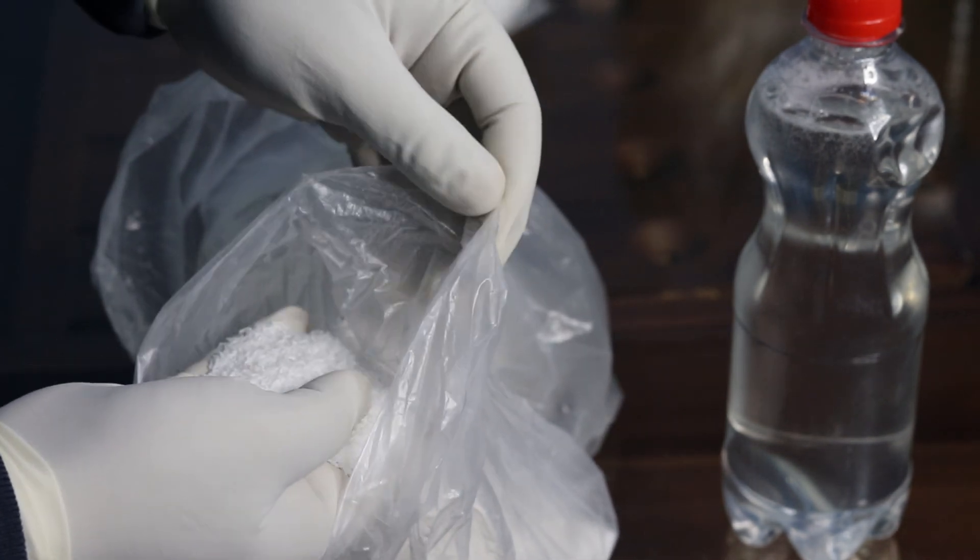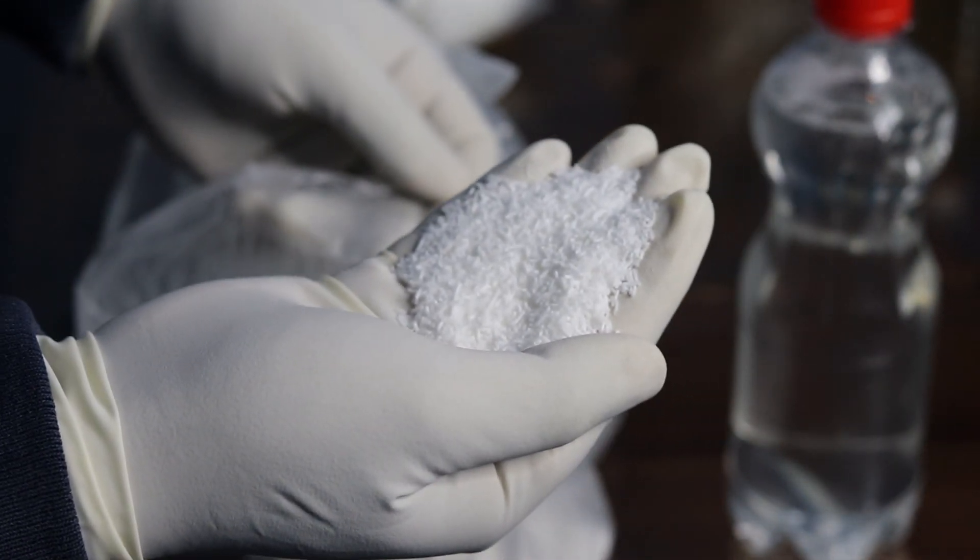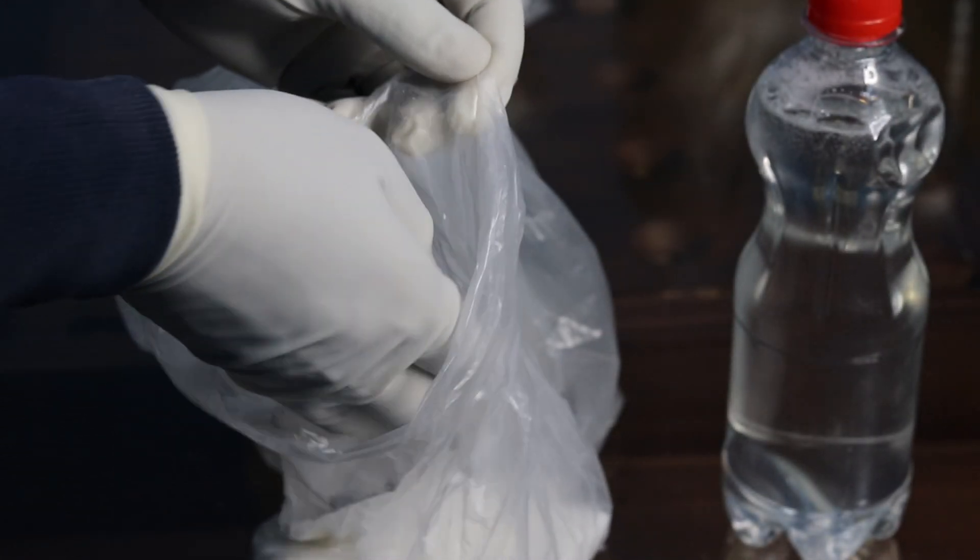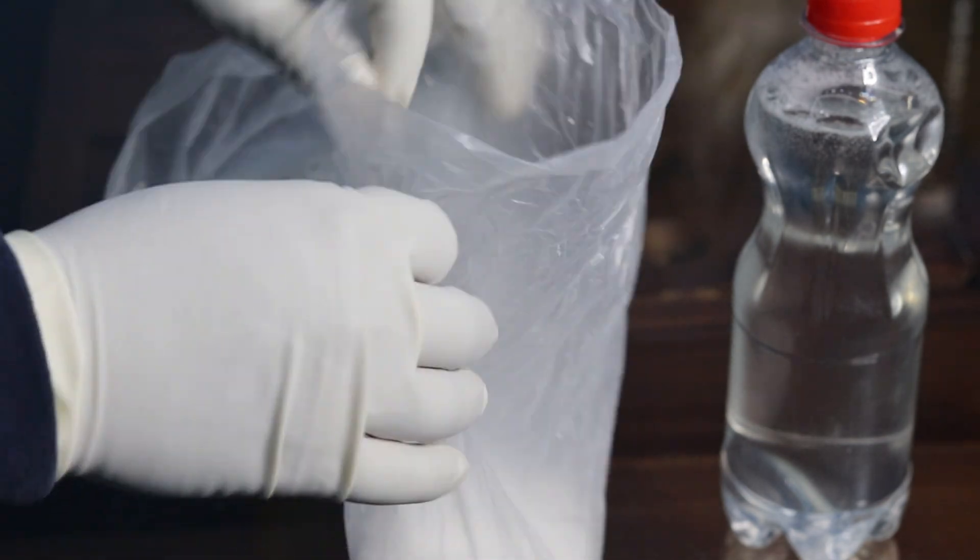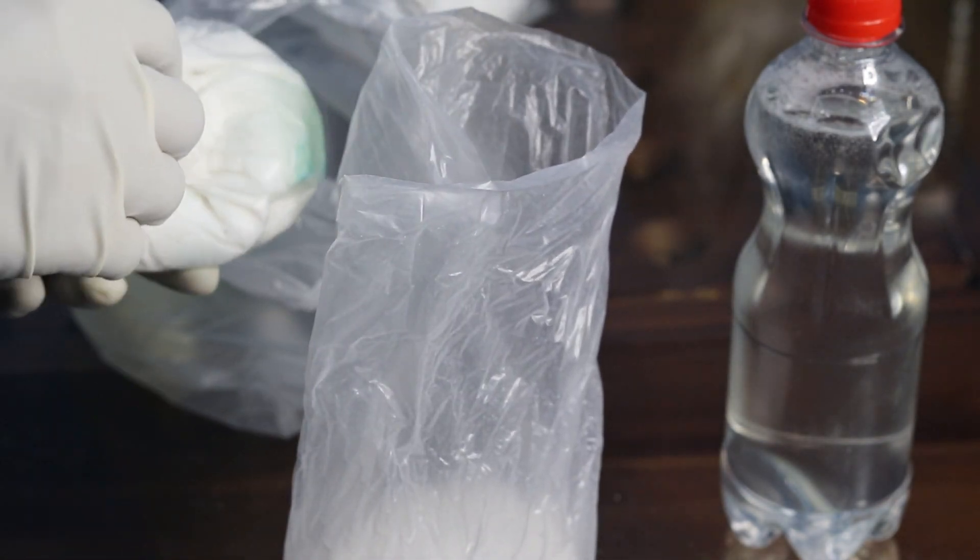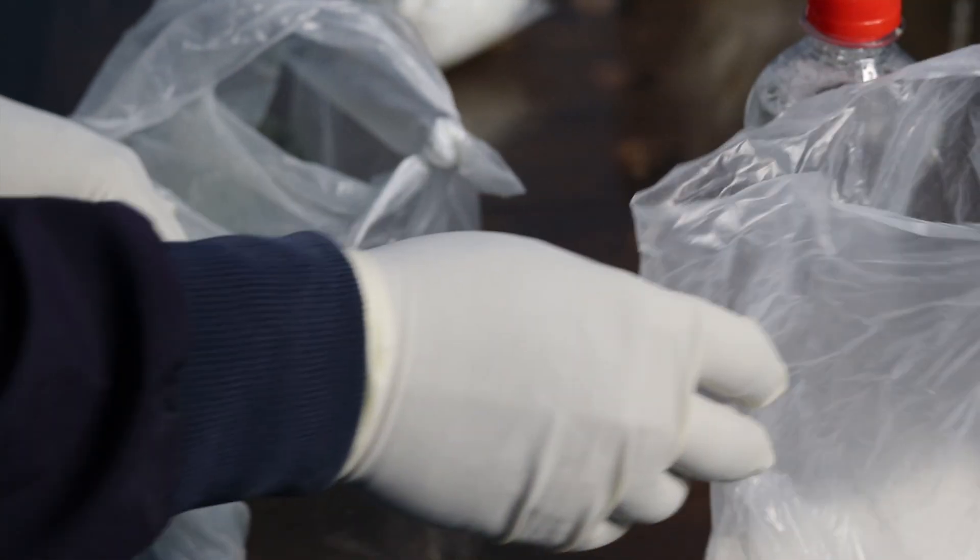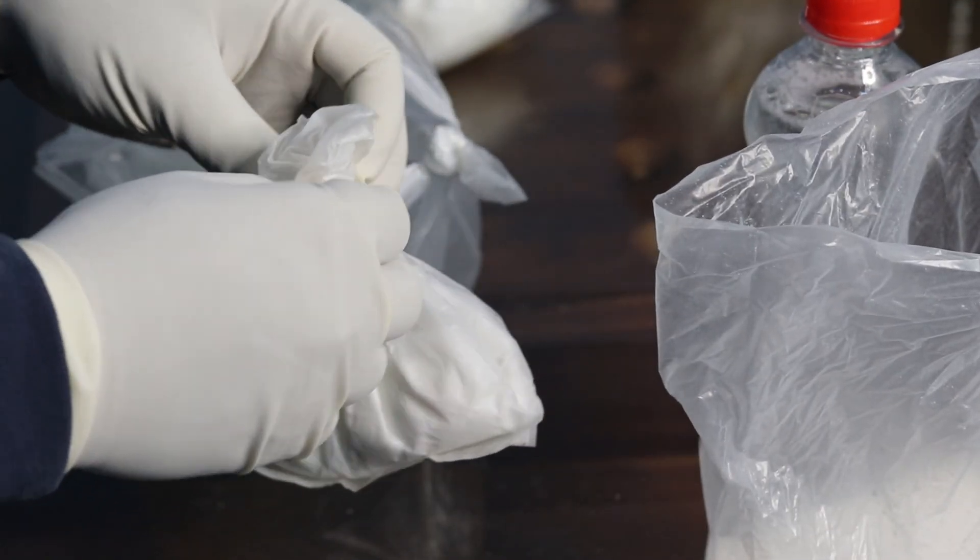In soap making, lye is the key ingredient in the saponification process, where it reacts with fats or oils to produce soap. Sodium hydroxide is mainly used for thick soap, and potassium hydroxide is used for liquid forms of soap making.